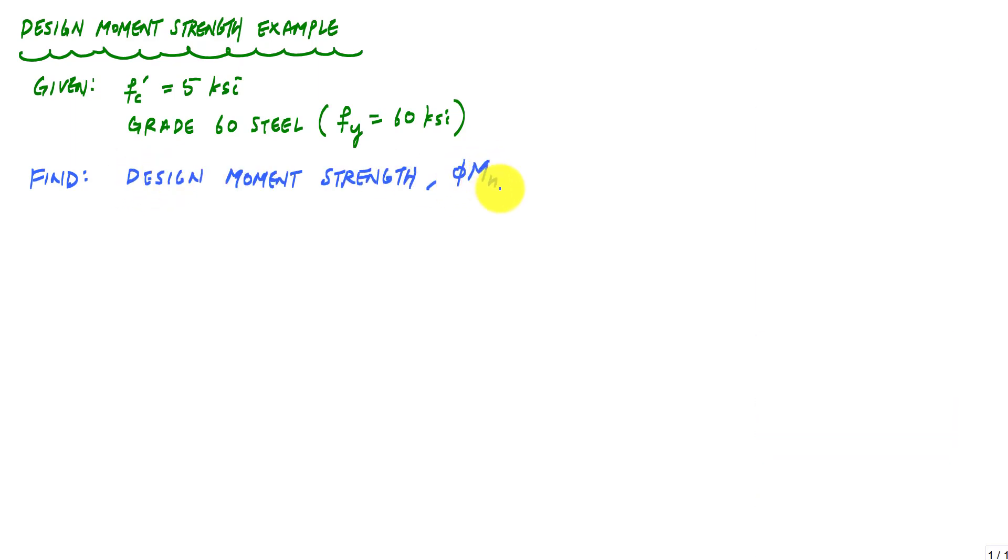We're going to return to reinforced concrete analysis and do a design moment strength calculation for an upside down triangle. We are given that the concrete compressive strength is 5 KSI. We've got grade 60 steel, which means we have the yield strength of steel of 60 KSI. And what we want to find is the design moment strength, phi MN, like this.